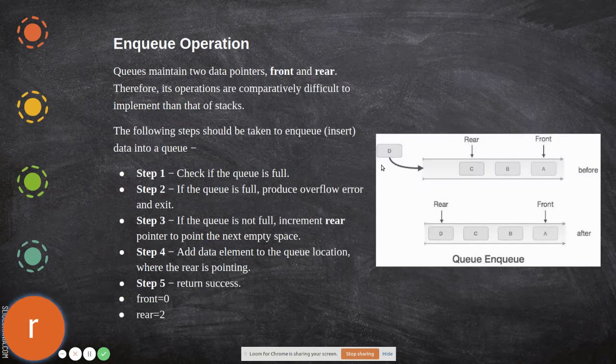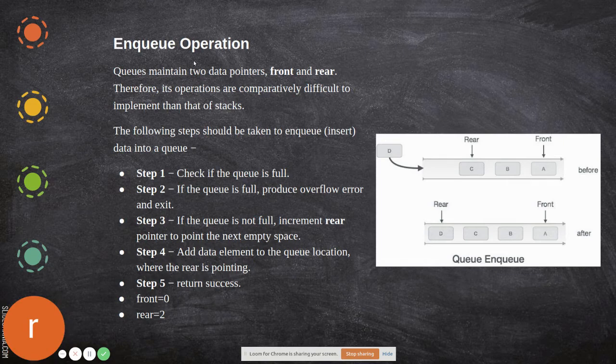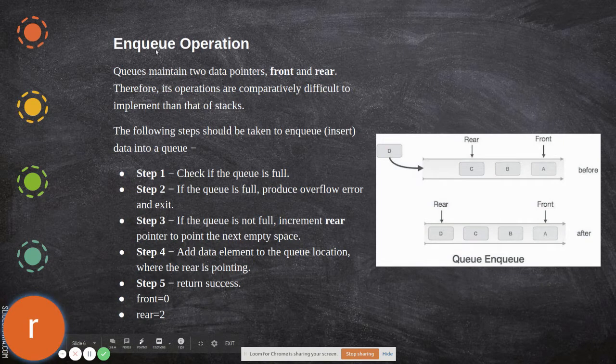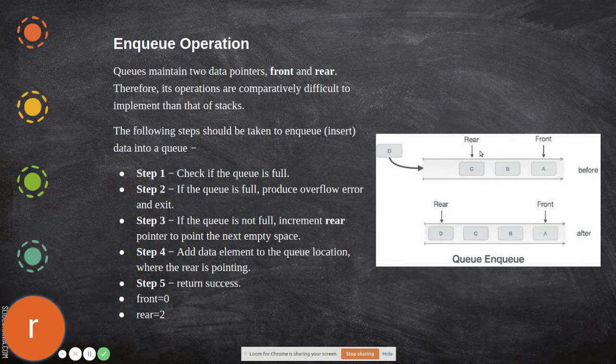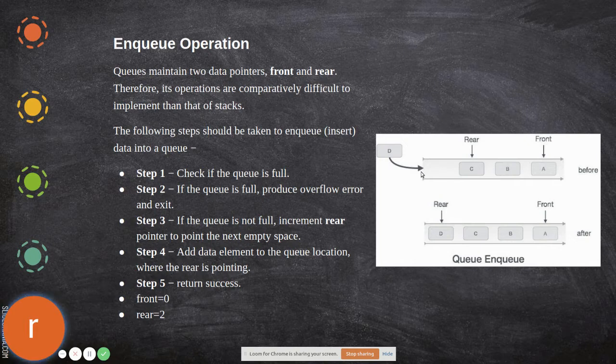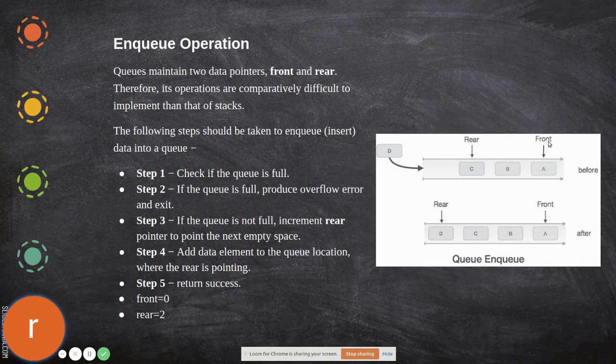First, we'll see how to do an enqueue operation. Enqueue operations maintain two data pointers, front and rear. Therefore, its operations are comparatively more difficult to implement than that of stack. Stack has only one pointer - top - through which you both add and remove. But here, through front you remove and through rear you add.